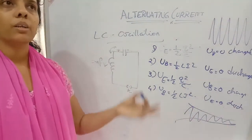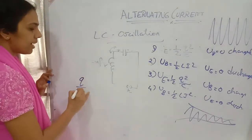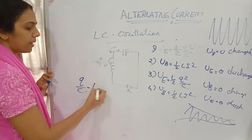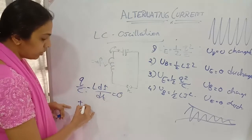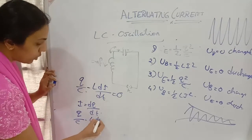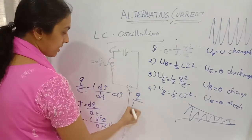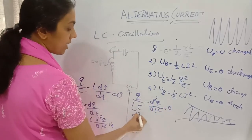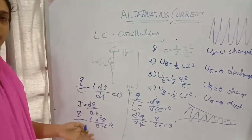Now we find the frequency of this oscillation. In the circuit with a capacitor and inductor, the equation is: q by C minus L times di by dt equals zero. Since i equals dq by dt, this becomes q by C minus L times d²q/dt² equals zero, which rearranges to d²q/dt² minus q by LC equals zero.